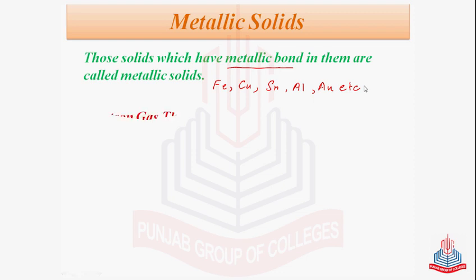First of all, let's discuss the electron gas theory. Electron gas theory was proposed by Drude and it was extended by Lorentz in the year 1923.